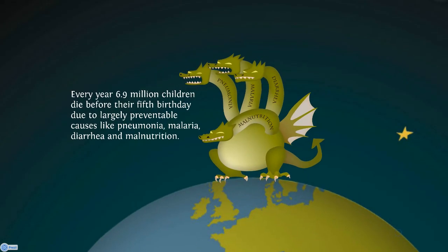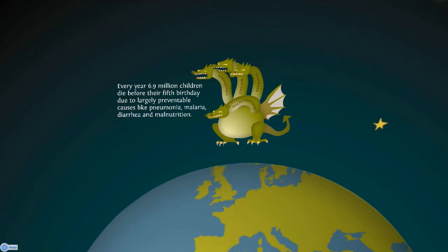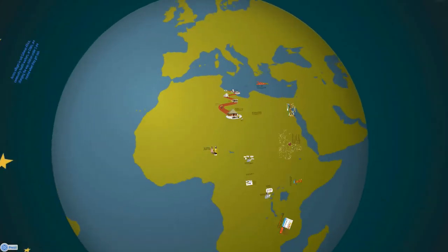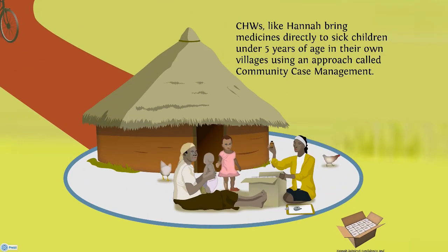Every year, 6.9 million children die before their fifth birthday due to largely preventable causes like pneumonia, malaria, diarrhea, and malnutrition. CHWs, like HANA, bring medicines directly to sick children under 5 years of age in their own villages using an approach called community case management.